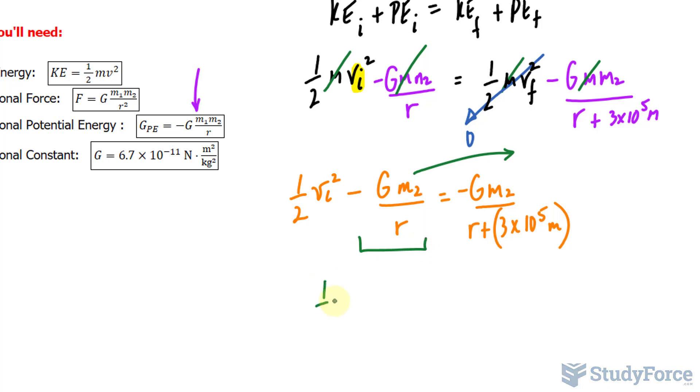So again, I have half initial velocity to the power of 2 is equal to negative G m sub 2 divided by its denominator, plus G m sub 2 over r.